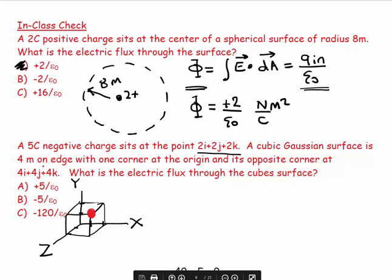And it says a cubic Gaussian surface is 4 meters on edge with one corner at the origin and the opposite corner at plus 4, plus 4, plus 4. So now, there's the origin, and then I go plus 4, plus 4. So there's the back wall, and then plus 4. So there's the front of this cube. And I hope you can see that in the scheme of things, the green cube, the Gaussian surface, is surrounding this charge. The charge is inside the Gaussian surface.